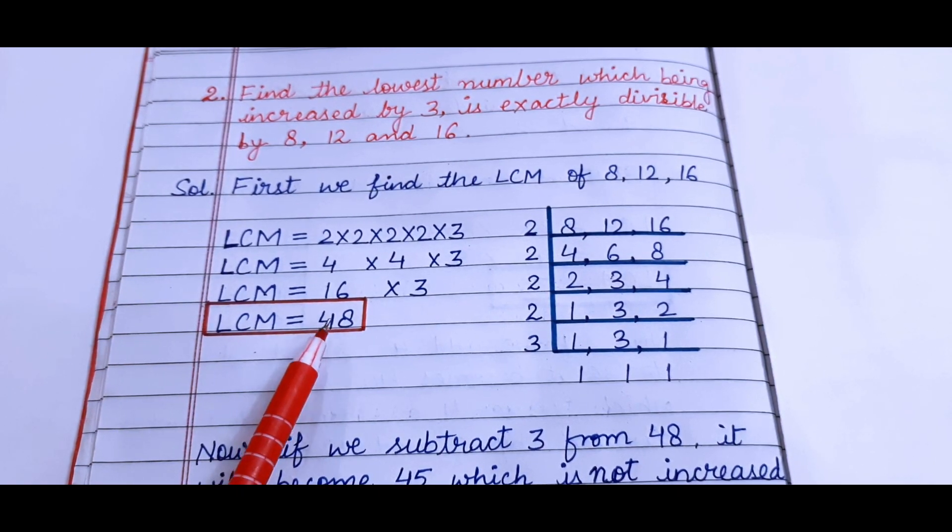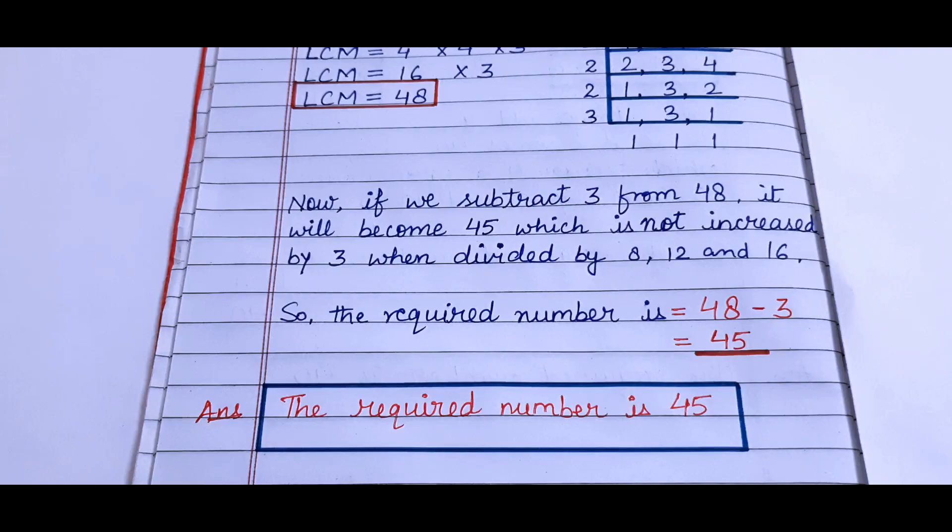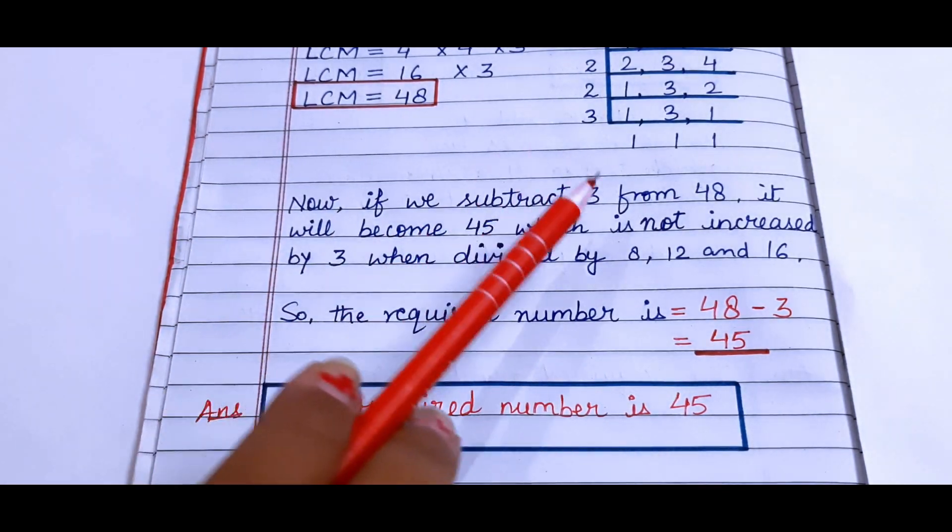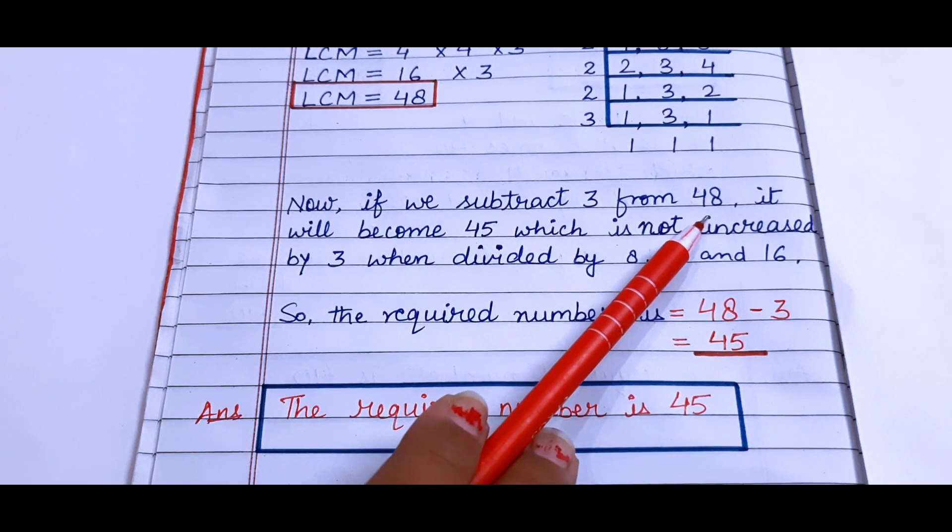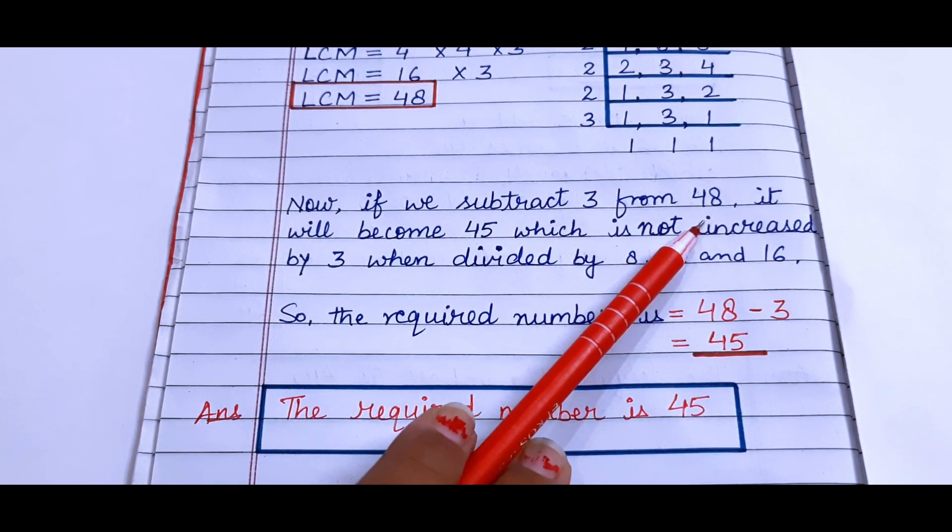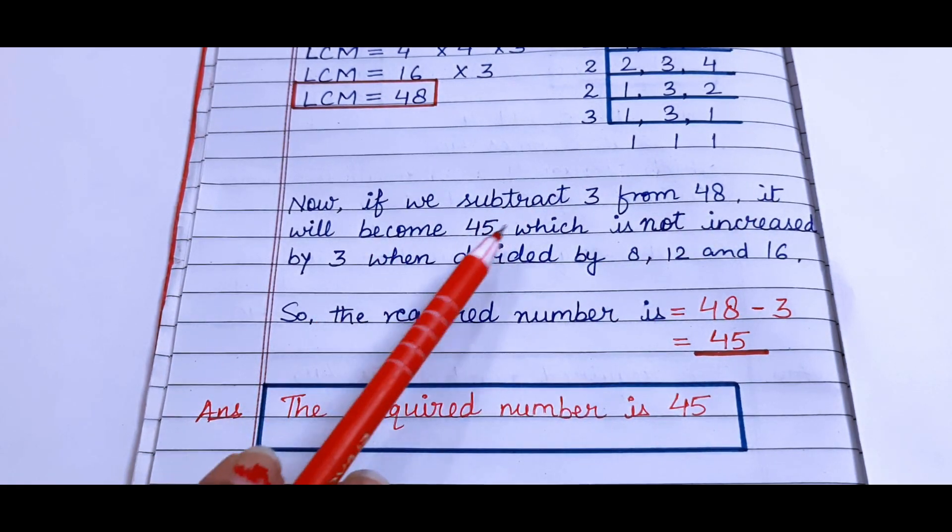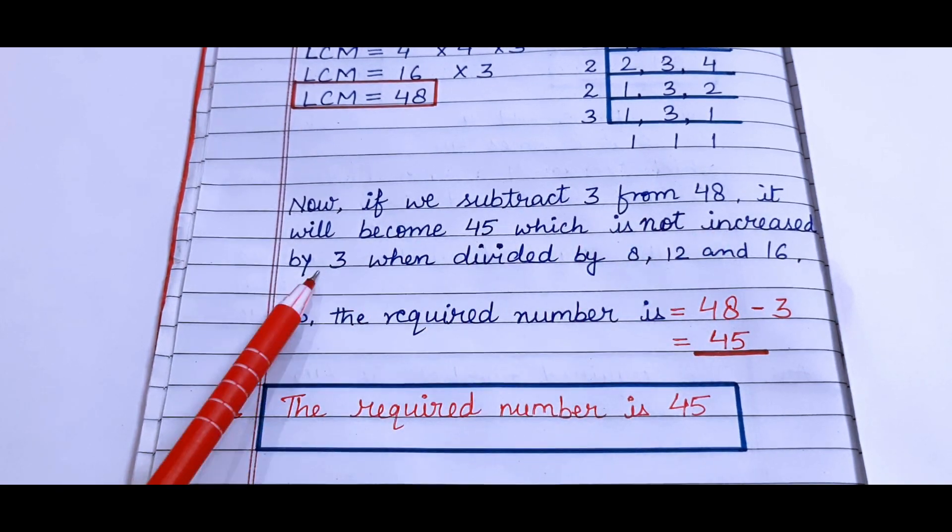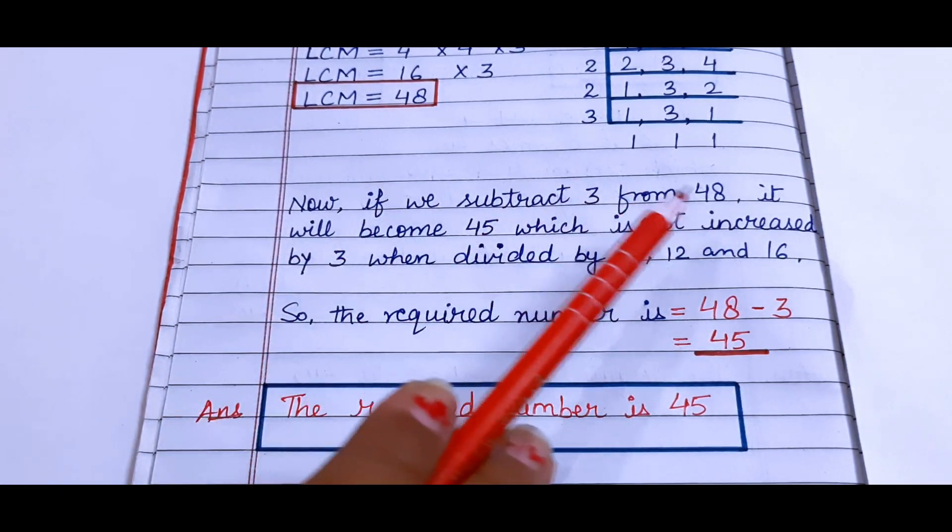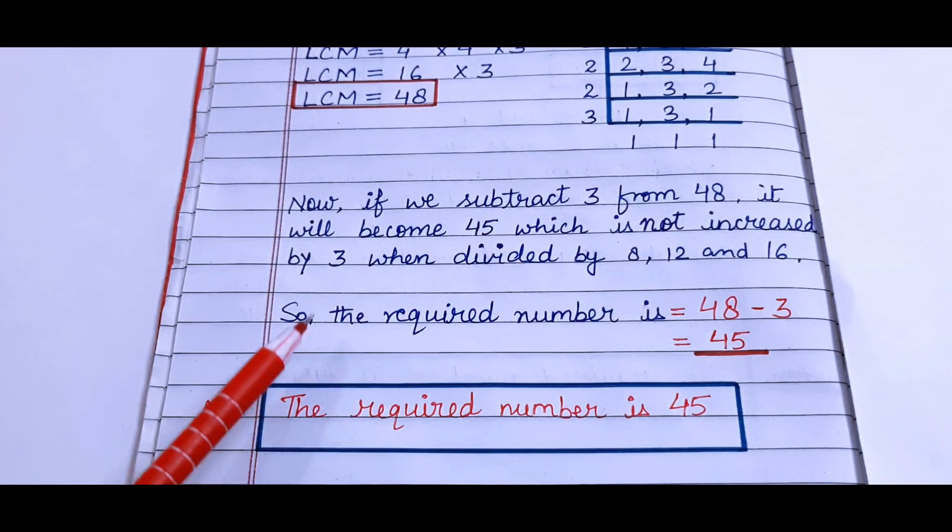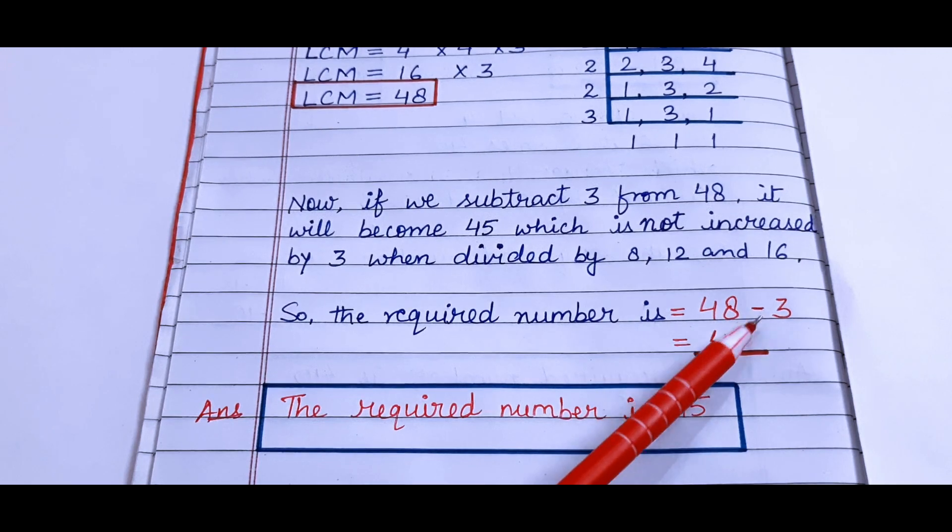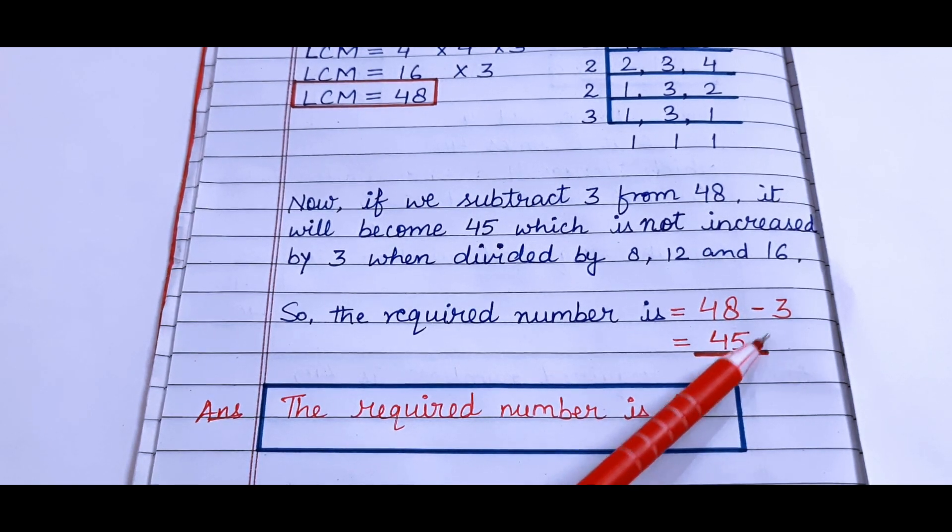I hope this much is clear. Now if we subtract 3 from 48 as it was said in the question, it will become 45, which is not increased by 3 because the increased number was 48. So the required number is 48 - 3 = 45.